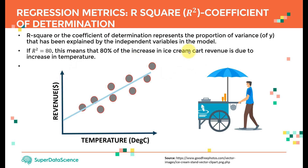Let's assume we have an ice cream cart with temperature and revenue as our variables. We plotted all the data points and came up with a linear model. If we calculate R-square and get R-square equals 80, that means 80% of the increase in the ice cream cart revenue is due to the increase in temperature.